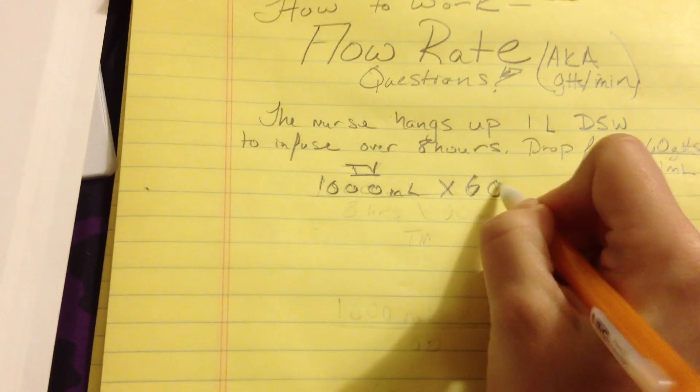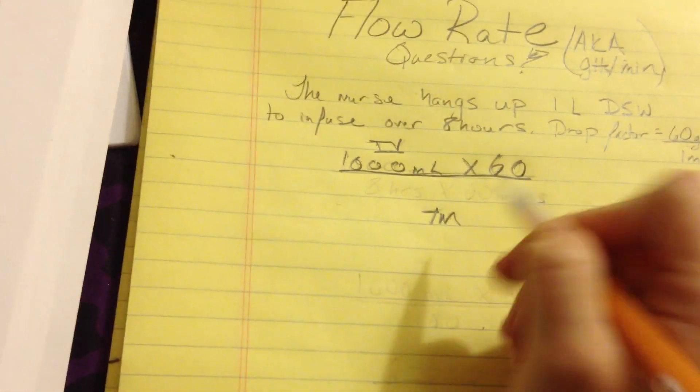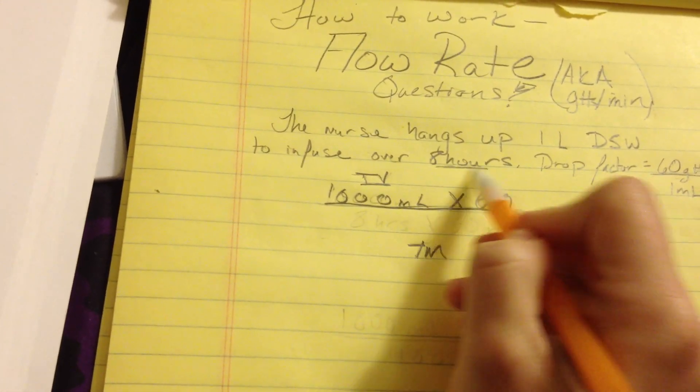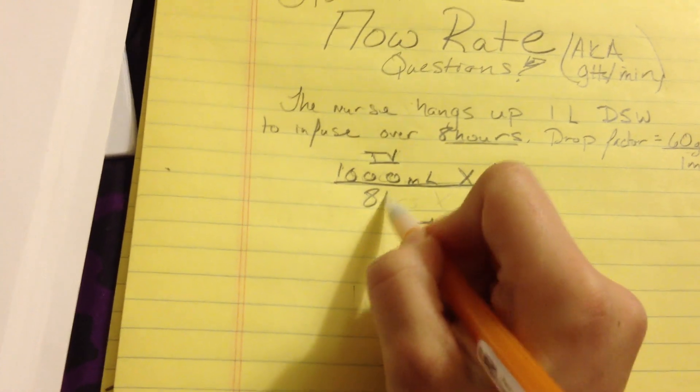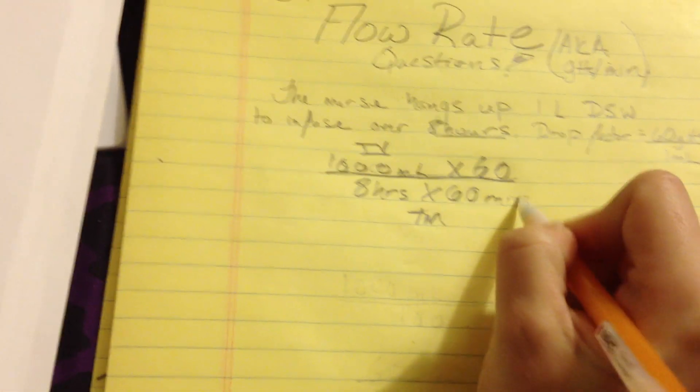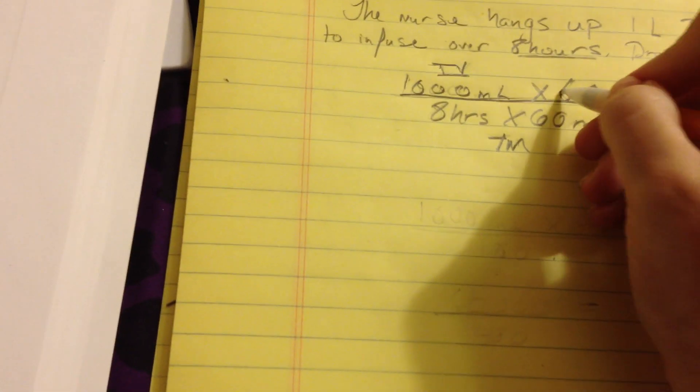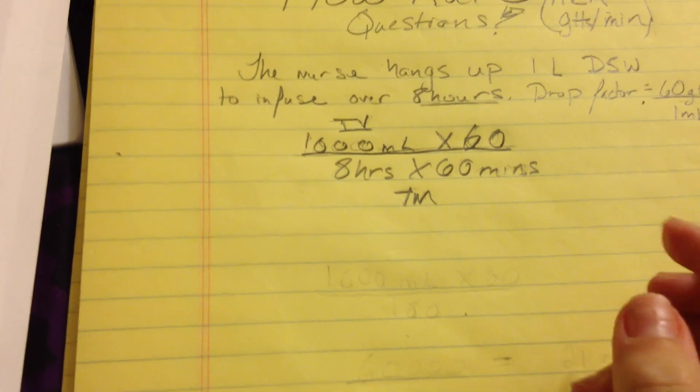And we're going to multiply it times 60, and we're going to set this over total minutes, which, as we go back up to the problem, is 8 hours times 60 minutes. I'm going to go down here, and I'm going to rewrite the problem as we go so that our sheet looks nice and clean.